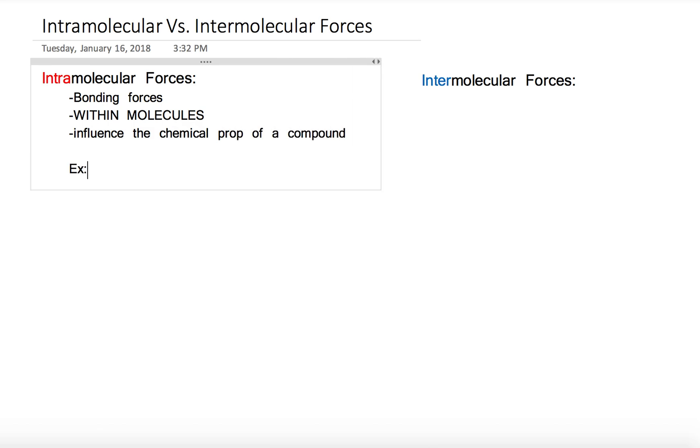These influence the chemical properties of a compound. Examples include metallic bonds, ionic bonds, and covalent bonds. We'll draw an example in a minute, but we're going to get into intramolecular forces now too.